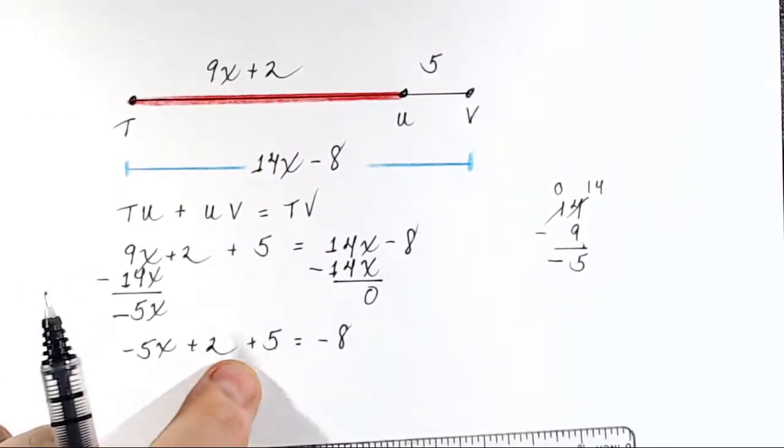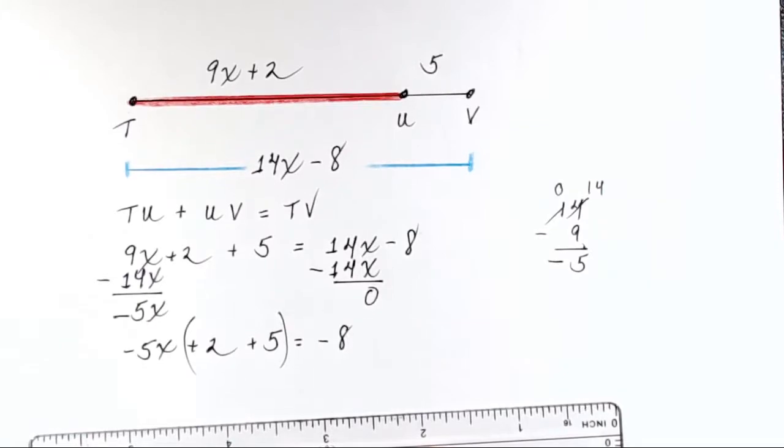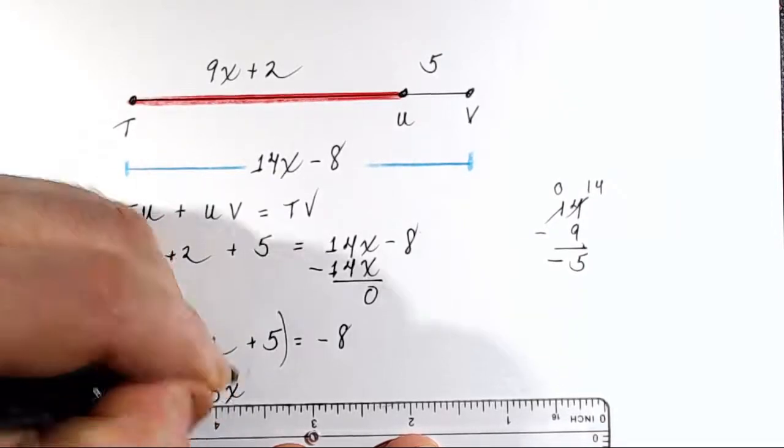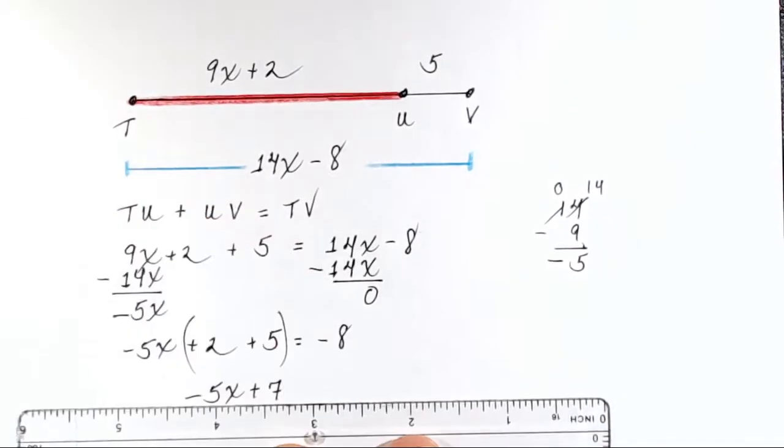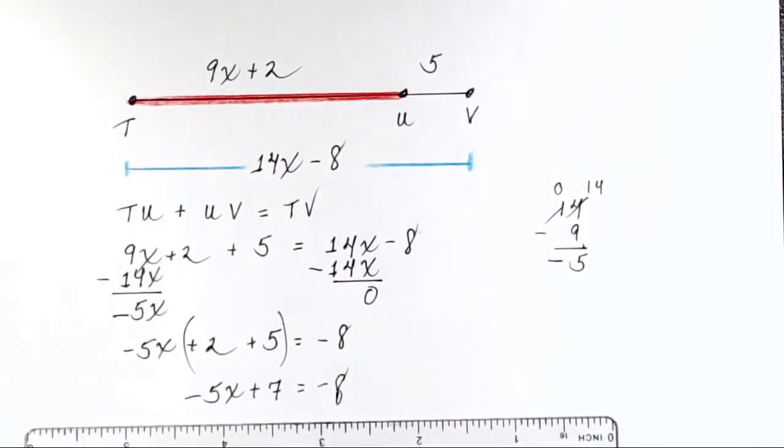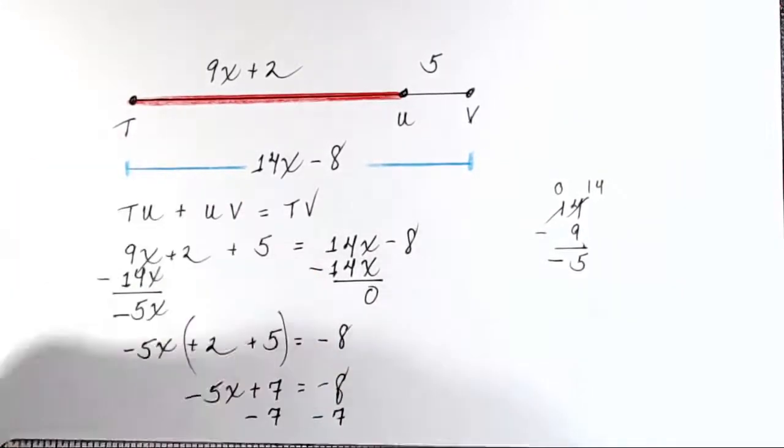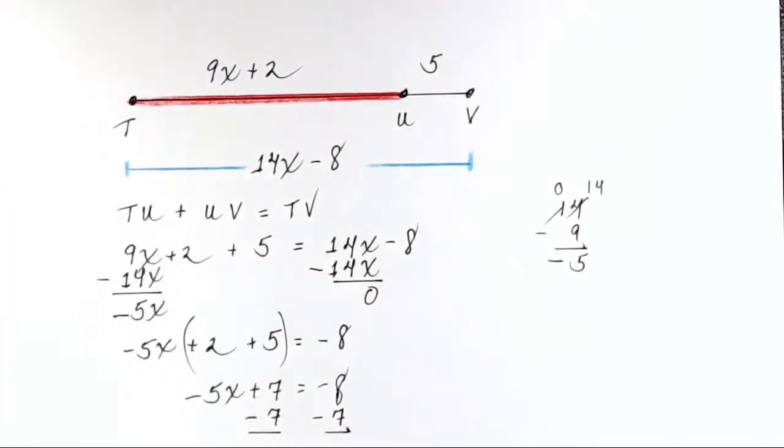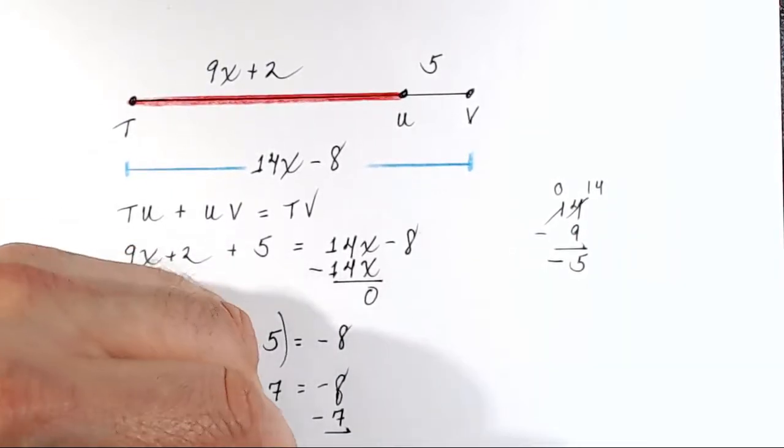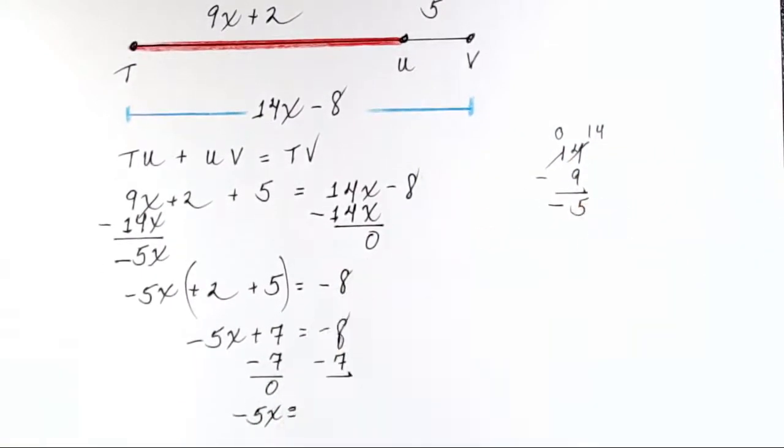All right, let's move these numbers over here. First of all, we can group these. What is 2 plus 5? It's 7. So we'll do a little intermediate step of saying negative 5x plus 7 is equal to negative 8. And now I need to get rid of the 7. So I will subtract 7 from both sides. On the left-hand side, 7 minus 7 is 0, so I can just write negative 5x equals. And on the right-hand side,